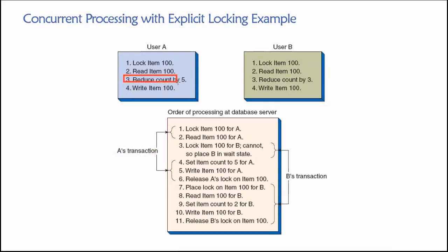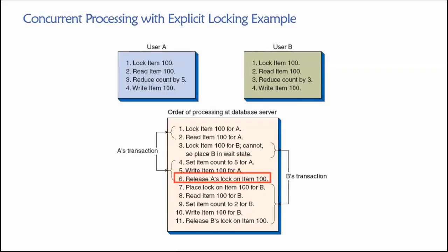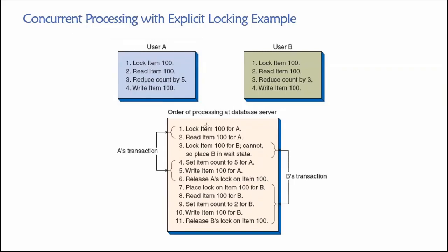Continuing with user A's requests: we are going to reduce the inventory count by five. Previously it was 10 — 10 minus 5 is 5 — so we set the new inventory count for item number 100 to 5 units. Then we write the result — that is, we make that permanent by committing the change to the database. Then we release the lock on item 100. At this point, all of the tasks for user A's transaction have been completed and the lock has been released.